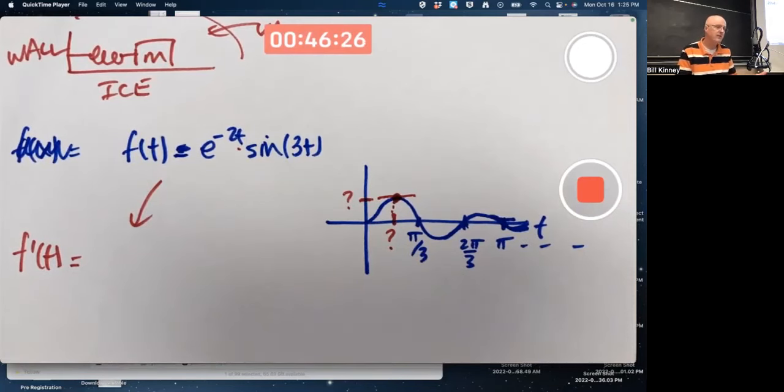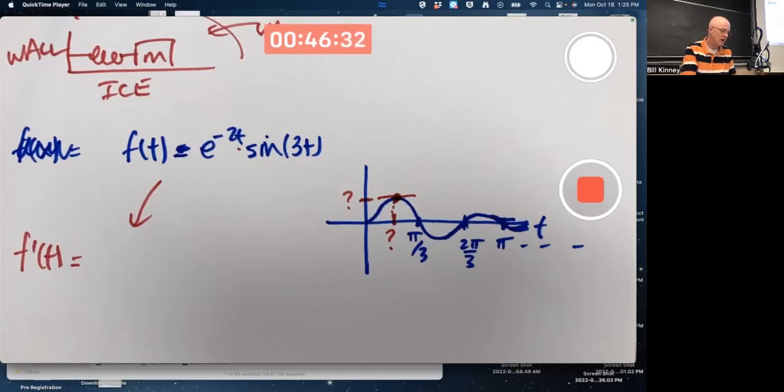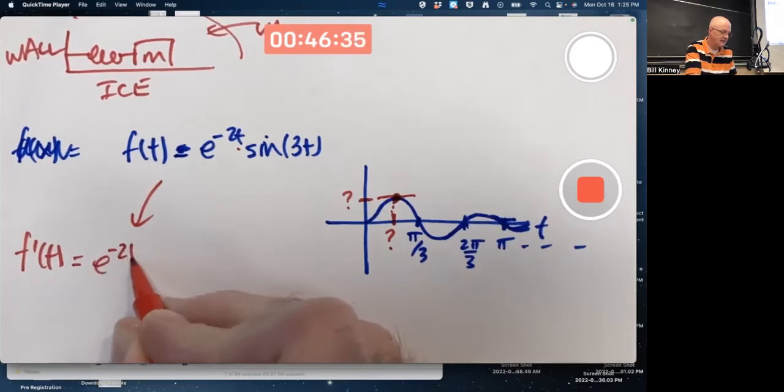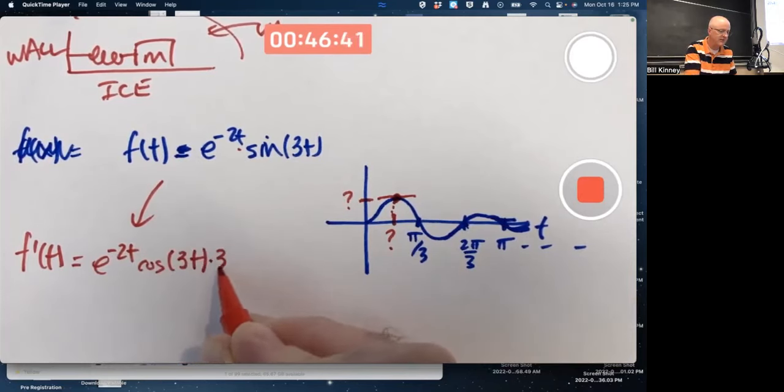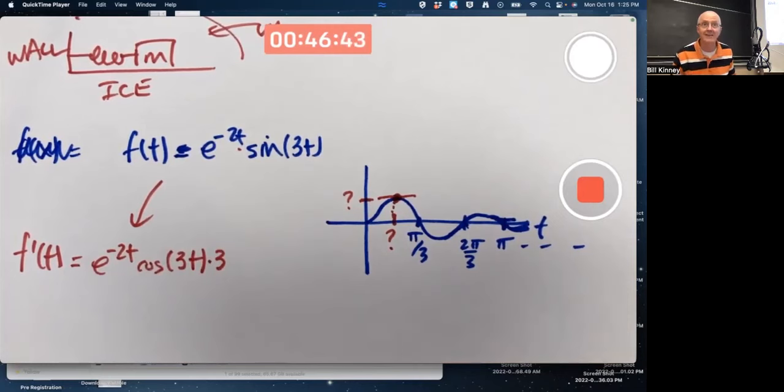What do I need for the derivative of this? I need the product rule, first of all, because it is a product. When I take the derivative of the left or the right, I will need the chain rule as well. I also, of course, need the derivative of e to the t is e to the t, and the derivative of sine is cosine. So, let's see, left d right, left d right, the derivative of sine is cosine, plug in the inside function, multiply times the derivative of the inside. I use the chain rule very fast there.